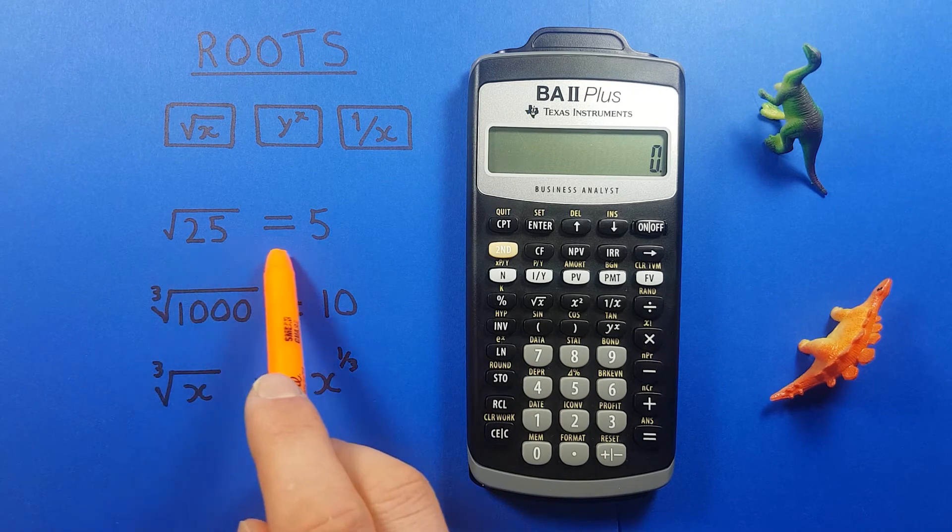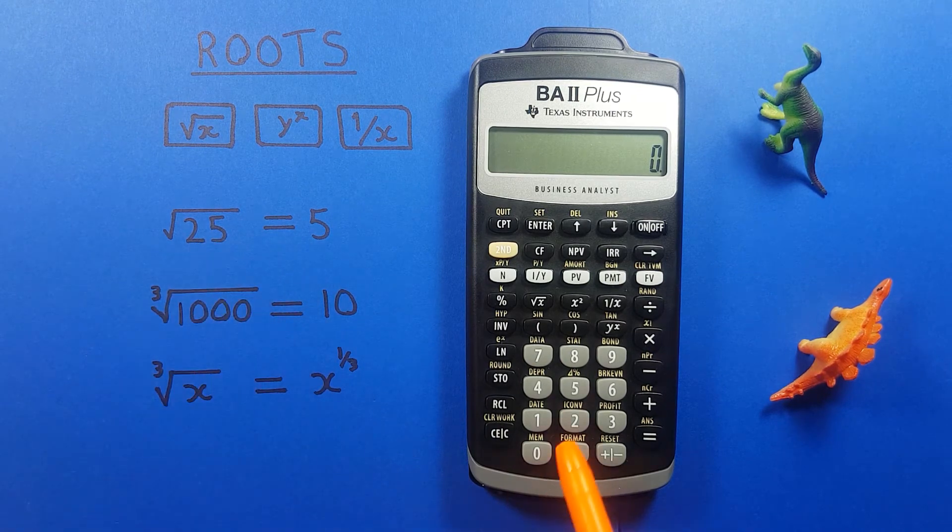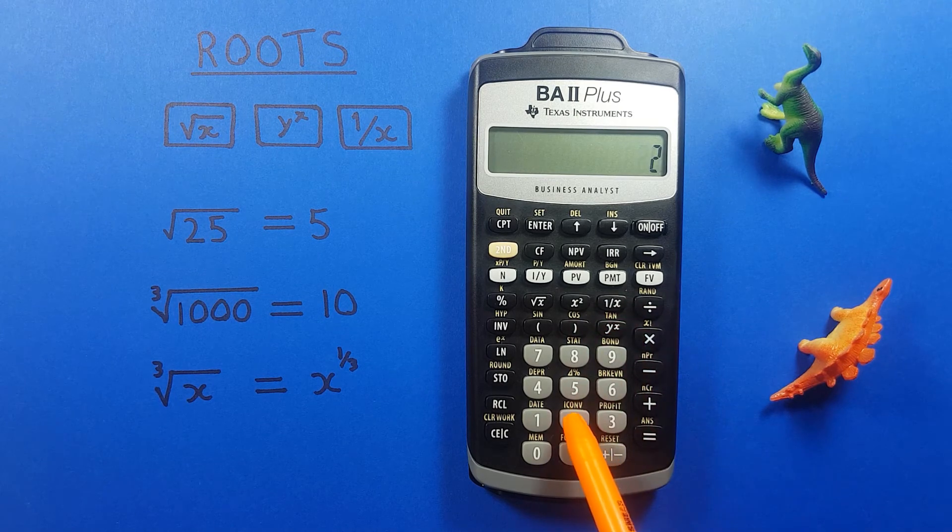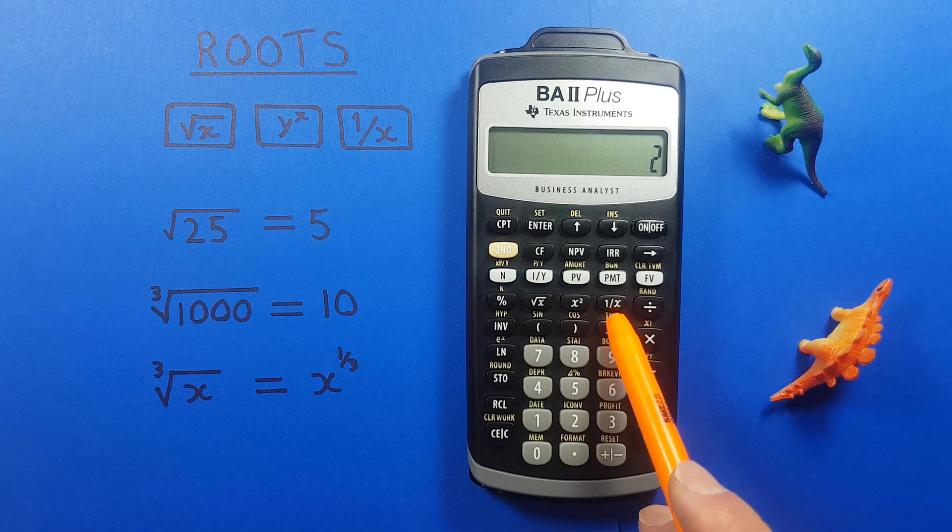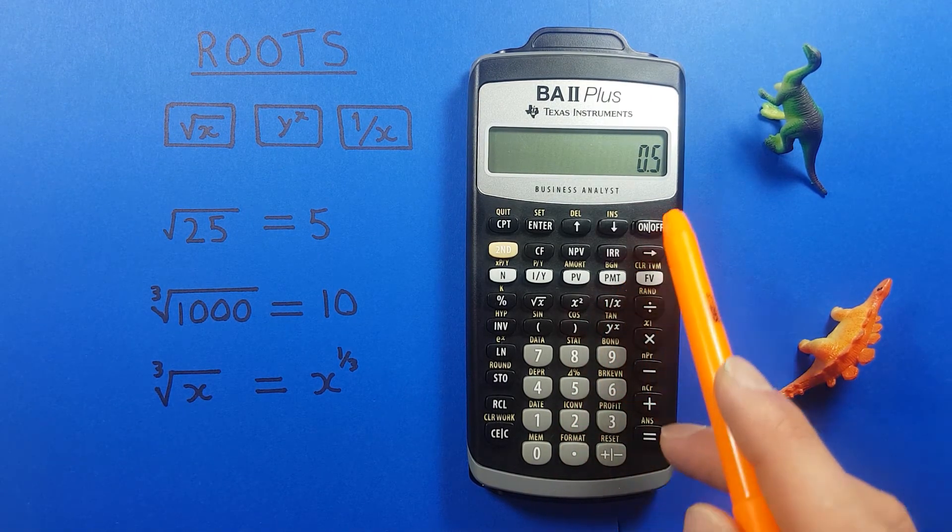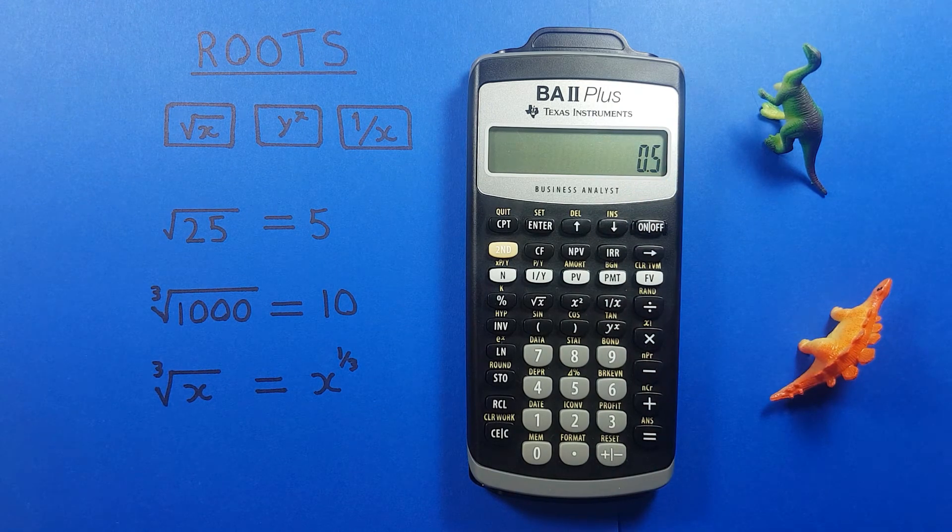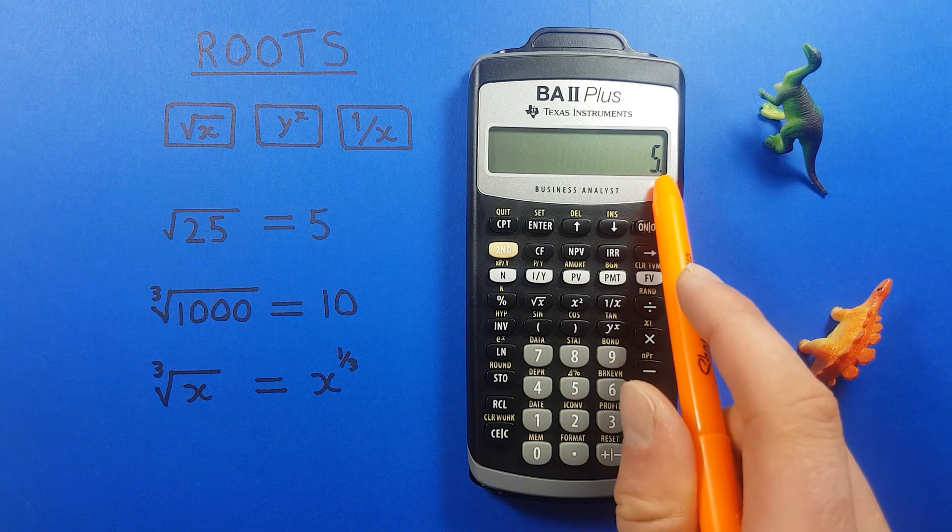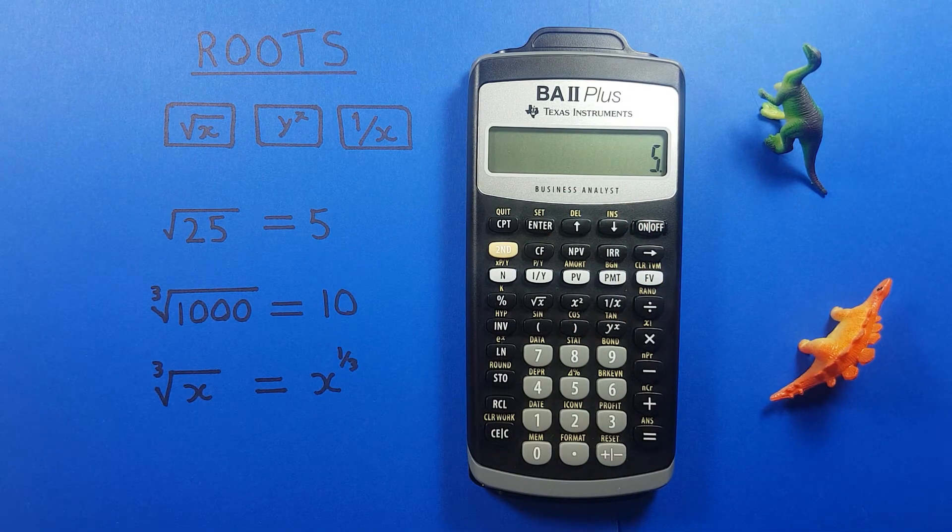We can verify this with our initial 25. So if we press 25, y to the x, 2, and then the 1 over x key, there we see that gives us 0.5, and if we press equals we see we get 5, which we know already is the correct answer.